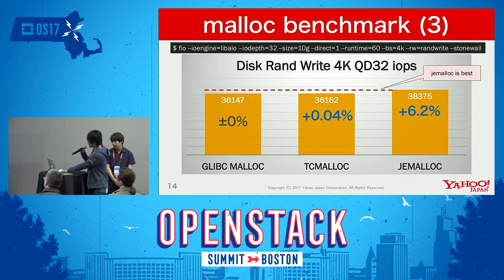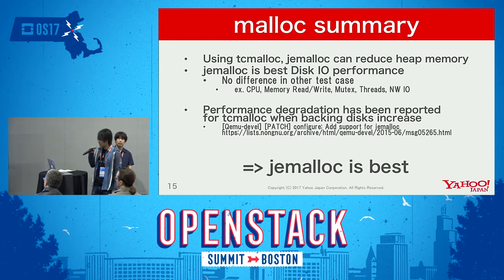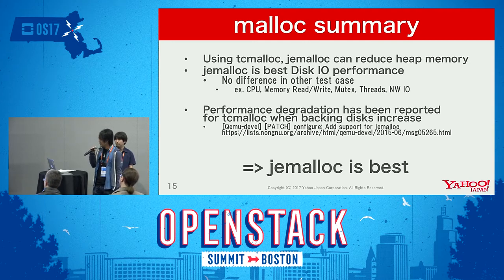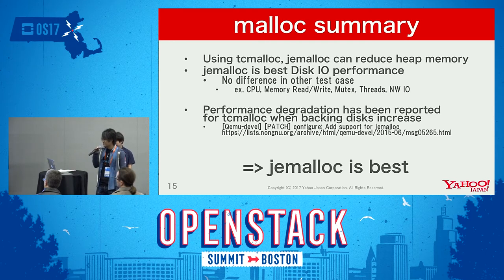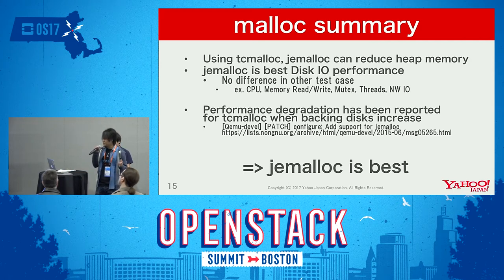Summary of malloc: it can reduce heap memory by using TCmalloc or jemalloc. jemalloc shows the best disk IO performance. But in other test cases such as CPU and memory, there was no difference. Also, TCmalloc has reported performance degradation in particular cases — please see the URL for details. Therefore, I think jemalloc is the best choice.